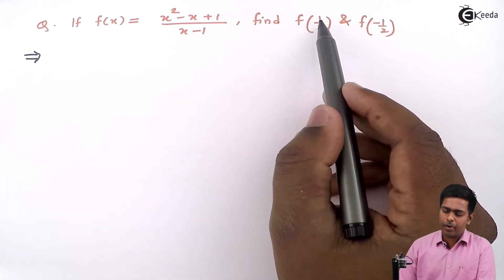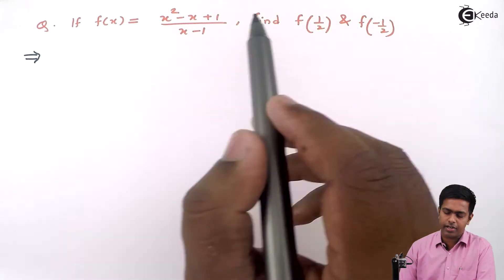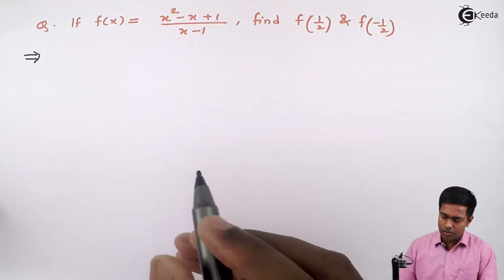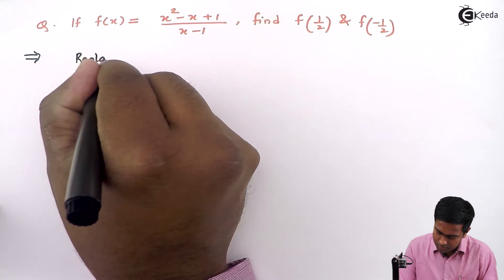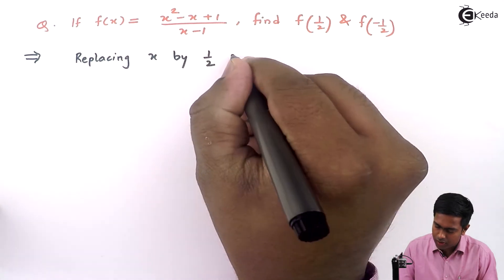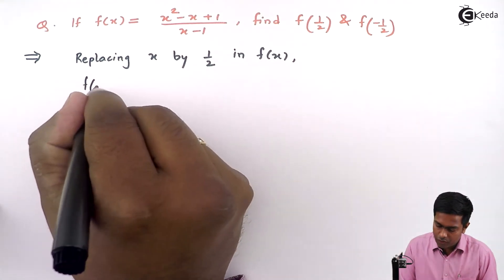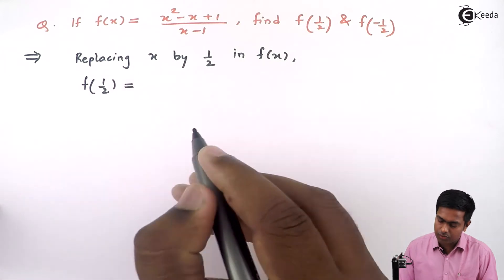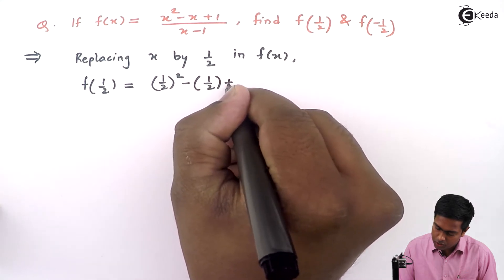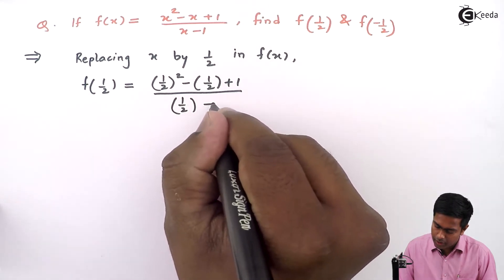To find f of 1 by 2, we will replace x by 1 by 2. As we are replacing it on the left hand side, we will replace it on the right hand side also and we will get our answer. So replacing x by 1 by 2 in f of x, we will get f of 1 upon 2 equals 1 upon 2 the whole square, minus 1 upon 2, plus 1, upon 1 upon 2 minus 1.